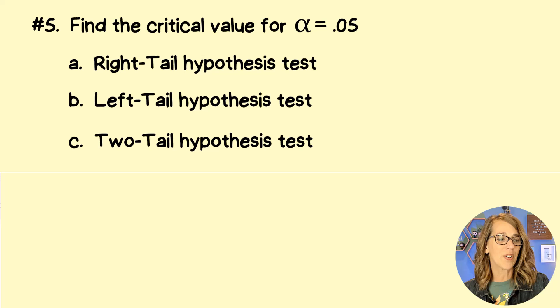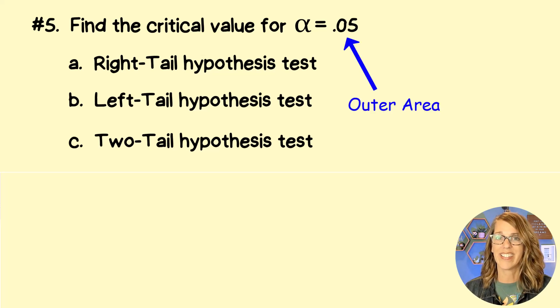Next up is number 5. And in number 5, we're looking for critical values. And critical values are also z-scores. And we're looking for critical values when alpha is equal to 0.05. Alpha is an area in a tail.